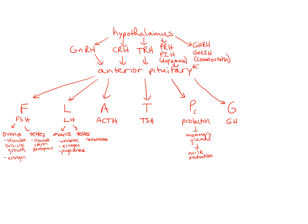Let's talk about three of these now and the other three later in another lecture. Let's follow our pathway and talk about FSH and LH. It all starts at the hypothalamus, which secretes GnRH — gonadotropin-releasing hormone. Remember, the gonads are the ovaries and the testes. GnRH goes to the anterior pituitary, telling it to release FSH and LH.